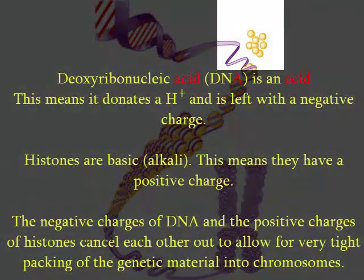These histones are special proteins because they have positive charges — in other words, they're alkaline. Those positive charges screen off the negative charges found on the surface of DNA. Recall that DNA is deoxyribonucleic acid; it's an acid because it has donated a proton, a positively charged hydrogen ion, leaving a negative charge behind. All those negative charges would repel one another if we didn't have the positive charges in the histone proteins to screen them out, and that is the first step in packing up the DNA into the form that we need.